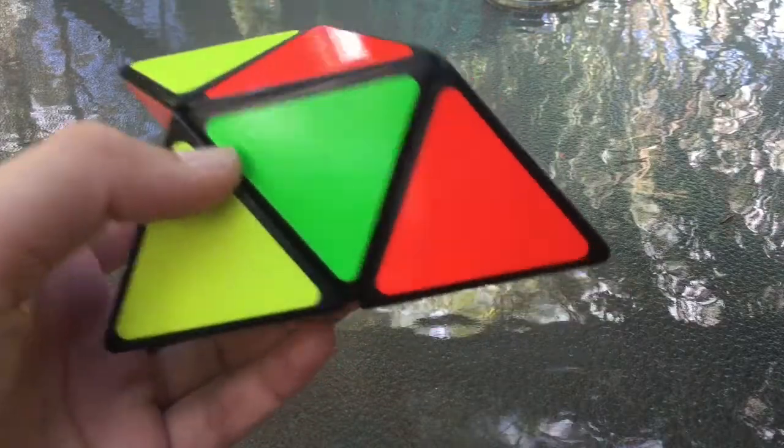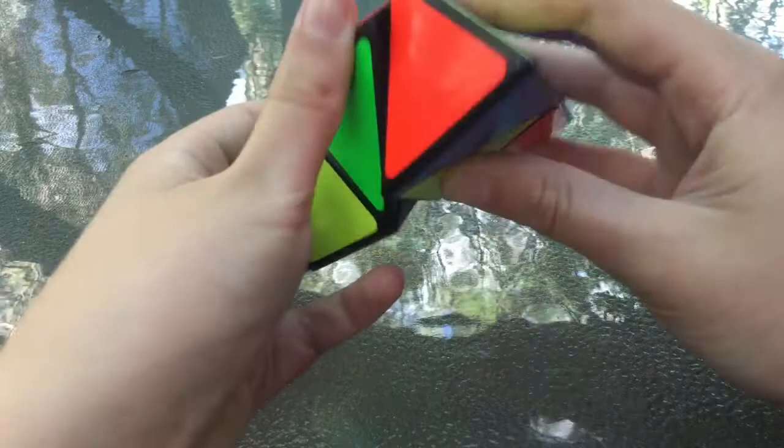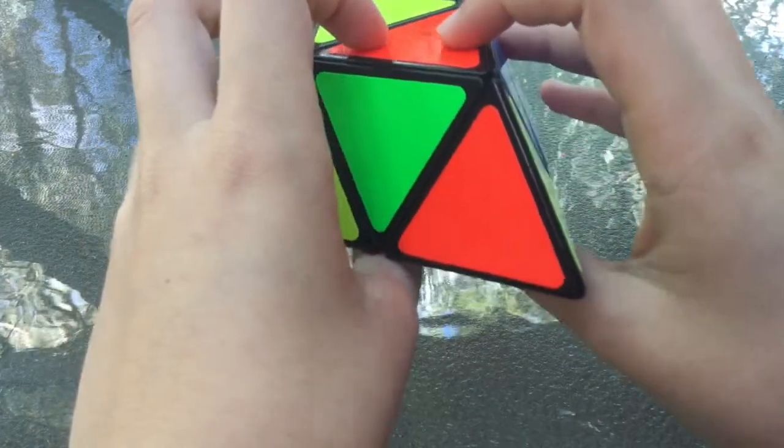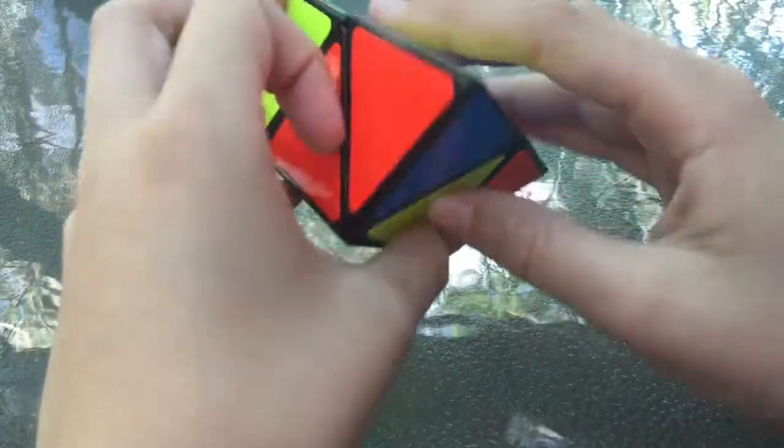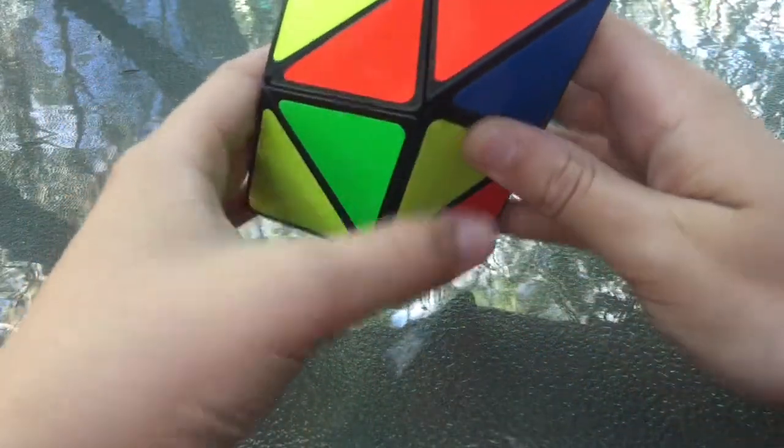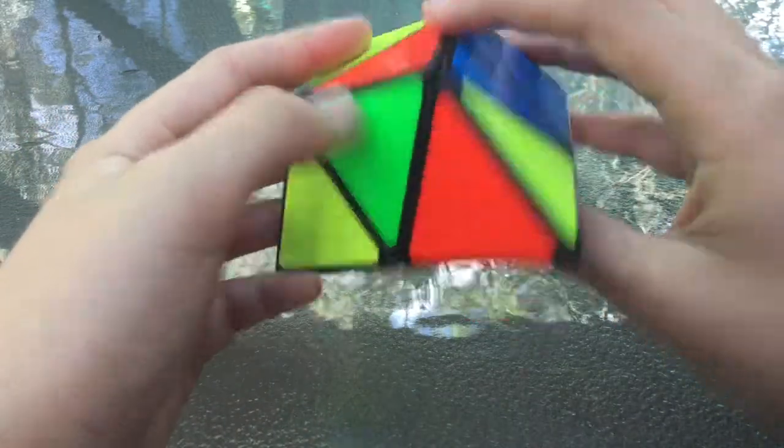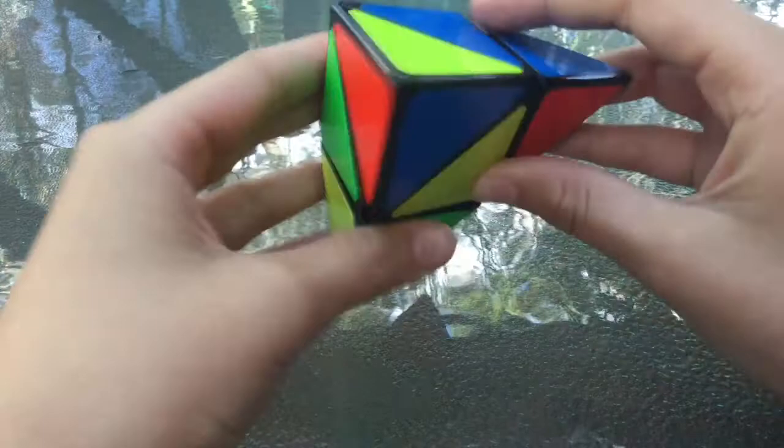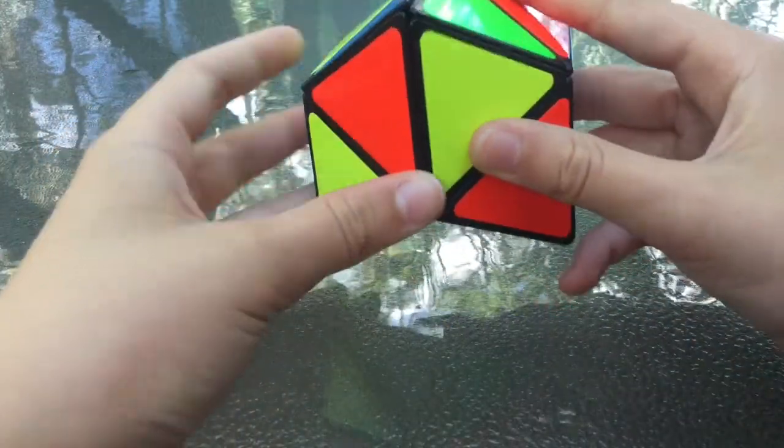So, the first step is to get these 2 red and yellow triangles next to each other. It needs to be the flat ones, not these tips. It will either already be done, or they're like that so you just have to do that, or they'll be like this so you just do that.